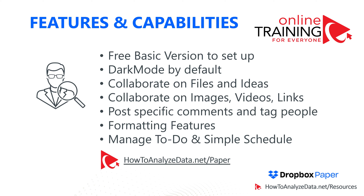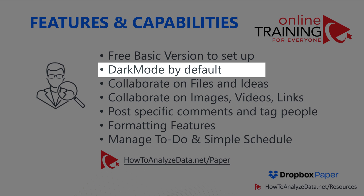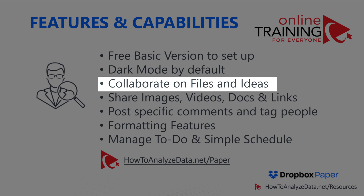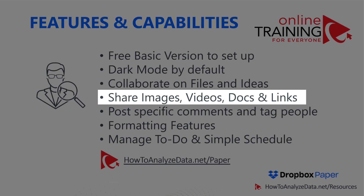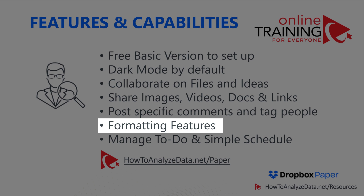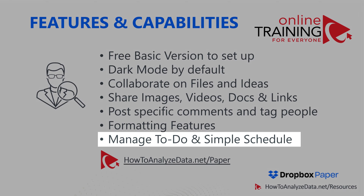So what are the cool features and capabilities that might make you consider using Dropbox Paper? The main reason is that the free basic version is packed with features. It uses dark mode by default, which reduces strain on your eyes and allows you to be more productive for longer. You can collaborate on files and ideas, share images, videos, docs, and links in a single workspace. You can post specific comments and tag people. Dropbox Paper also provides phenomenal formatting capabilities including rich text format and tables, and you can manage to-do lists and do simple scheduling with a very simple user interface.